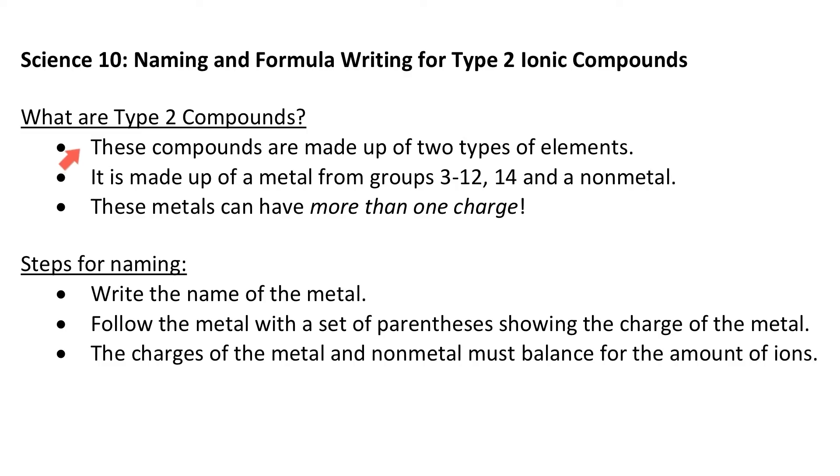These compounds are made up of two types of elements. Remember we said before an ionic compound has a metal and a nonmetal. But what we see now is type 2 compounds are made up of a metal from groups 3 to 12 and 14 and they also consist of a nonmetal.